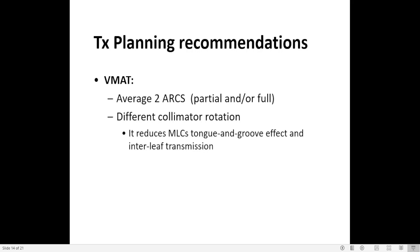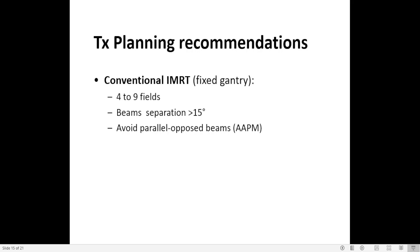For VMAT planning recommendations, use two arcs — partial or full — depending on your target size, location of the target, and location of critical structures. Use different collimator rotations for each arc, because it reduces the MLC tongue-and-groove effect and interleaf transmission. For conventional IMRT, use 4 to 9 fields with beam separation greater than 15 degrees, and avoid parallel opposed beams. According to AAPM, parallel opposed beams in conventional IMRT do not show significant beam shaping potential and increase dose spillage outside the target. Keep in mind these are only recommendations; as a planner you can weigh the pros and cons for each case.